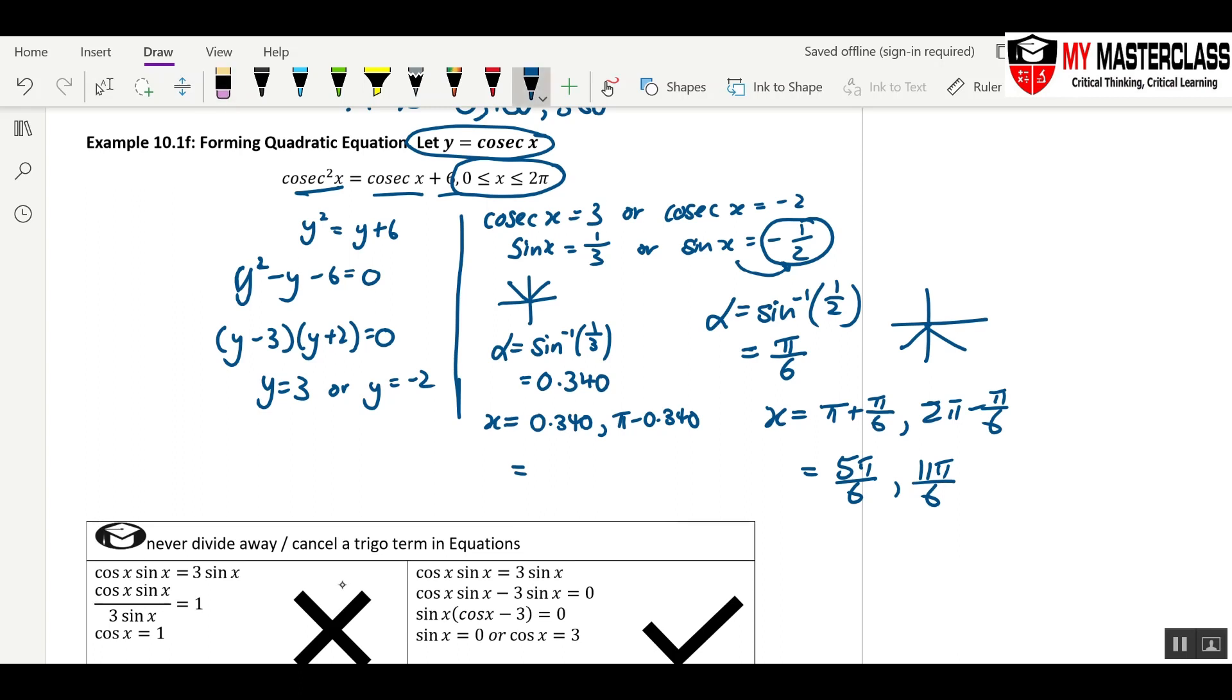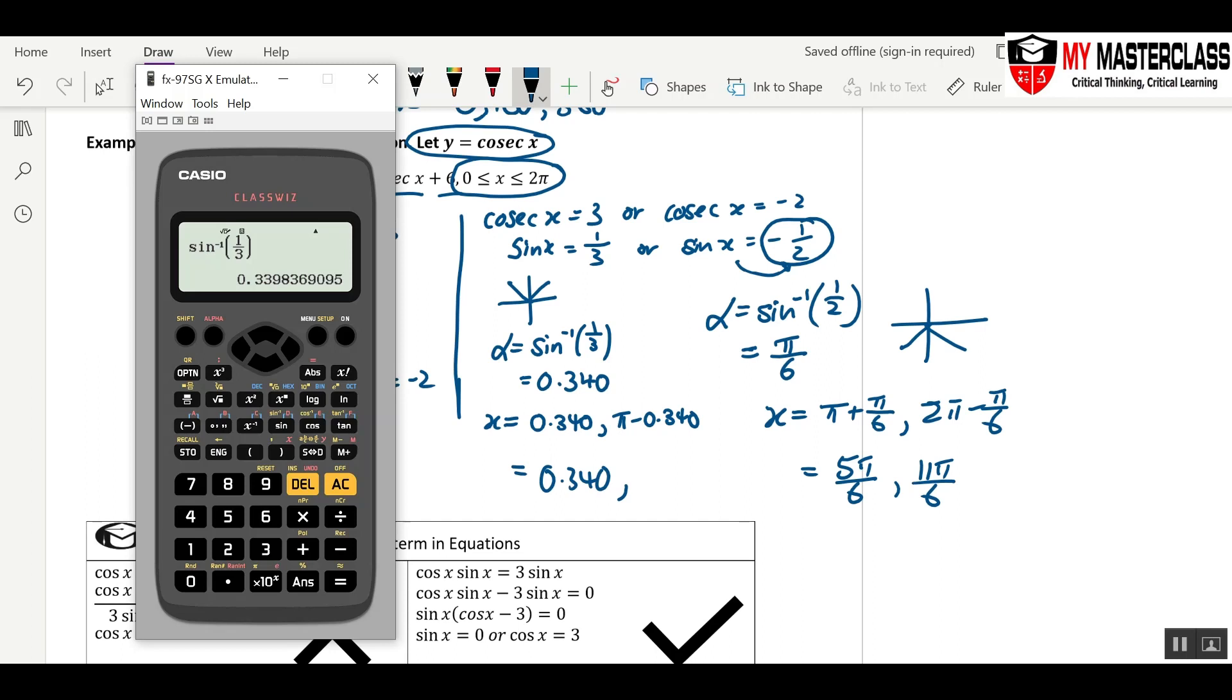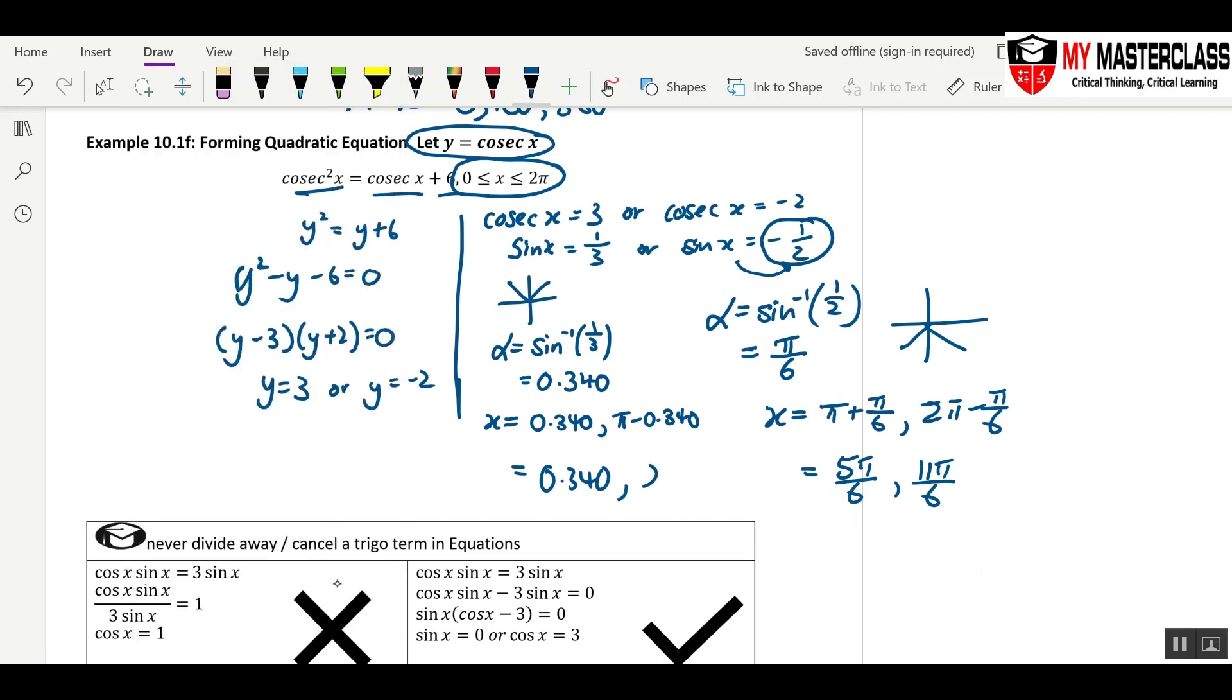Sorry, let's evaluate this together. 0.340 and comma, use the ANS function. Pi minus ANS equals to 2.80, 2.80, and these are your 4 answers.